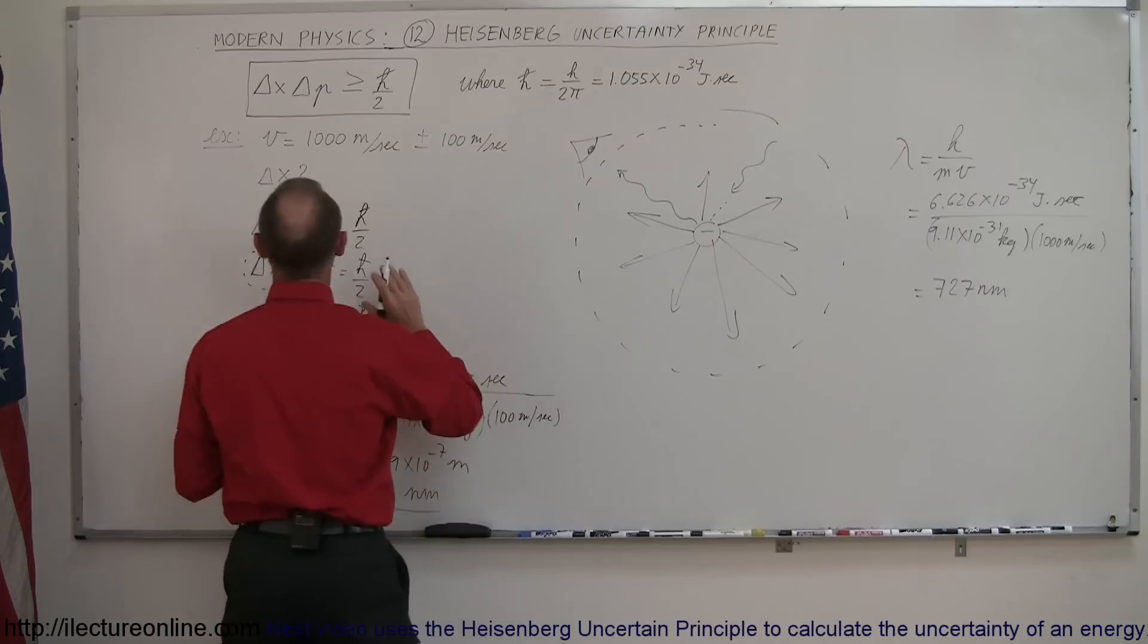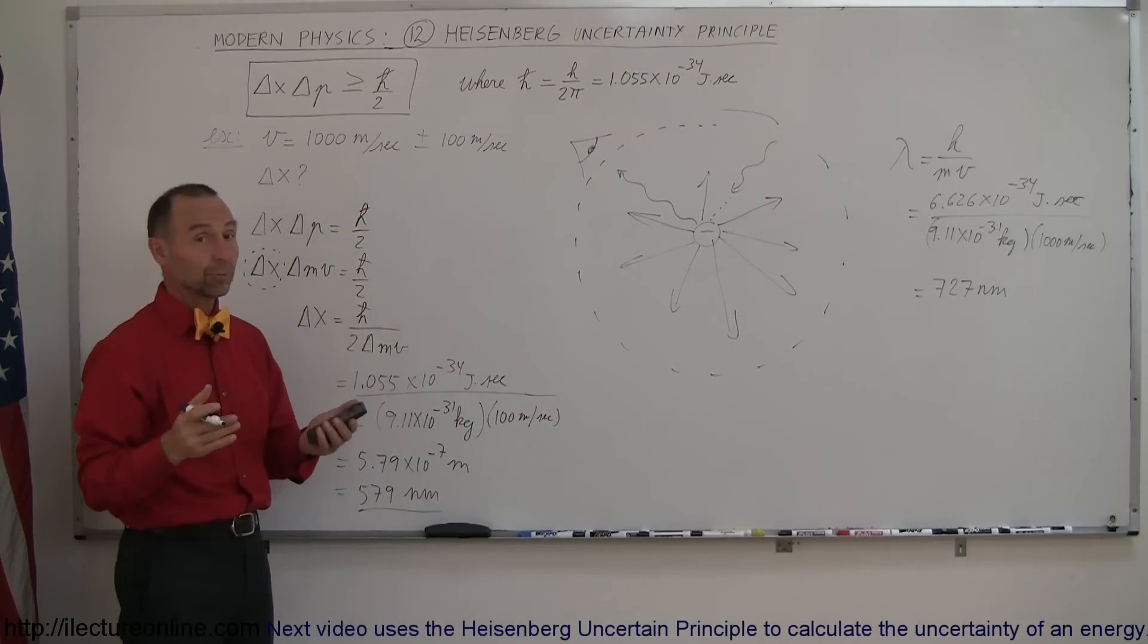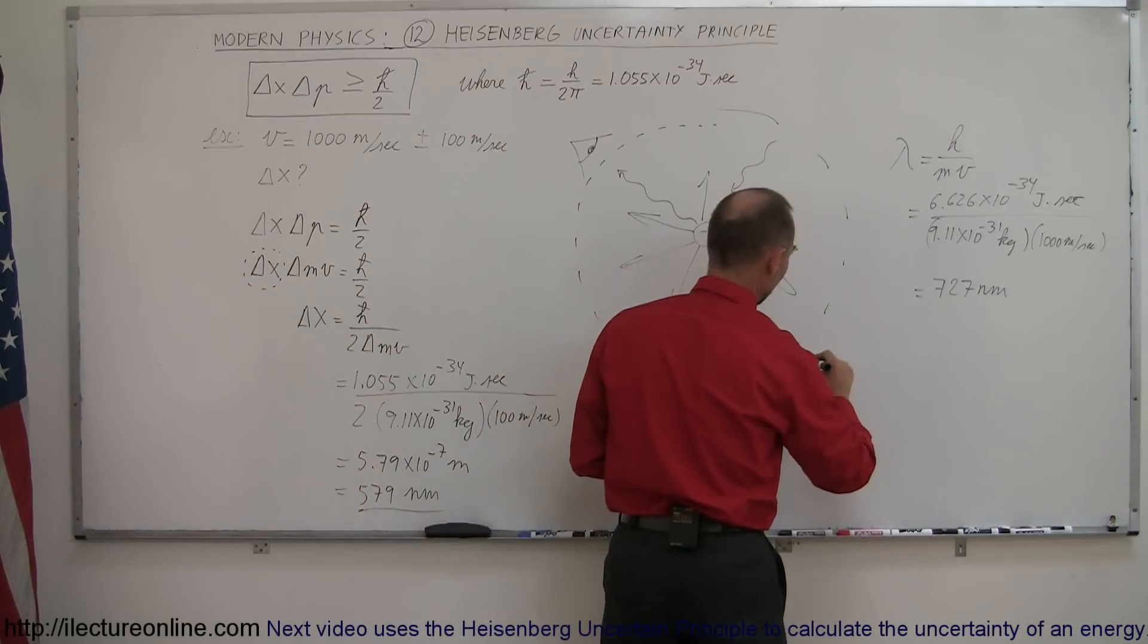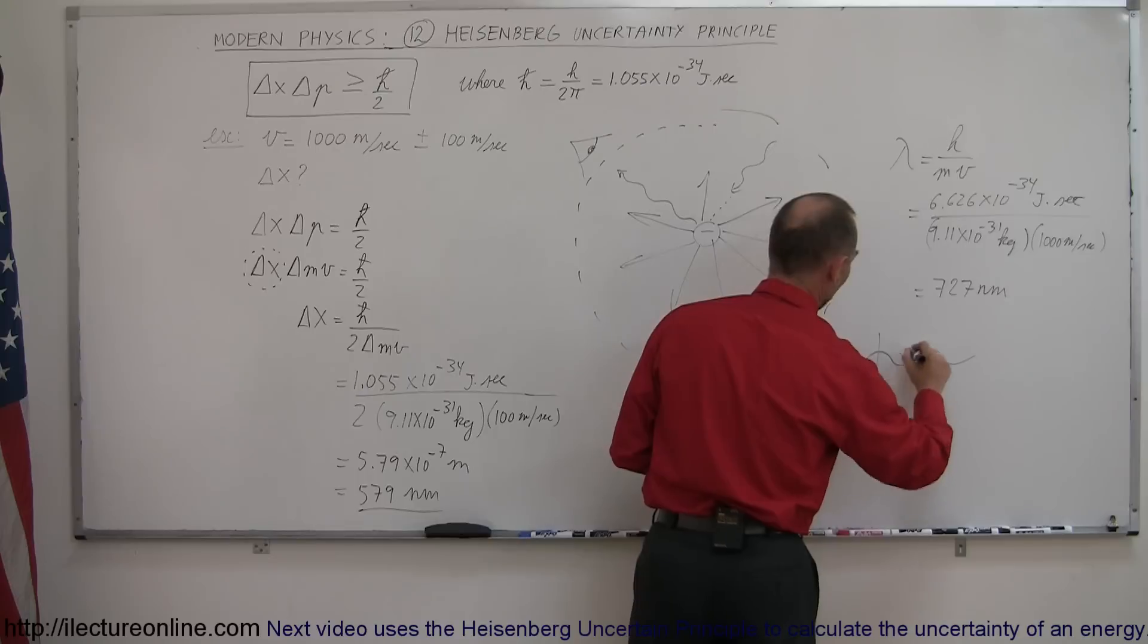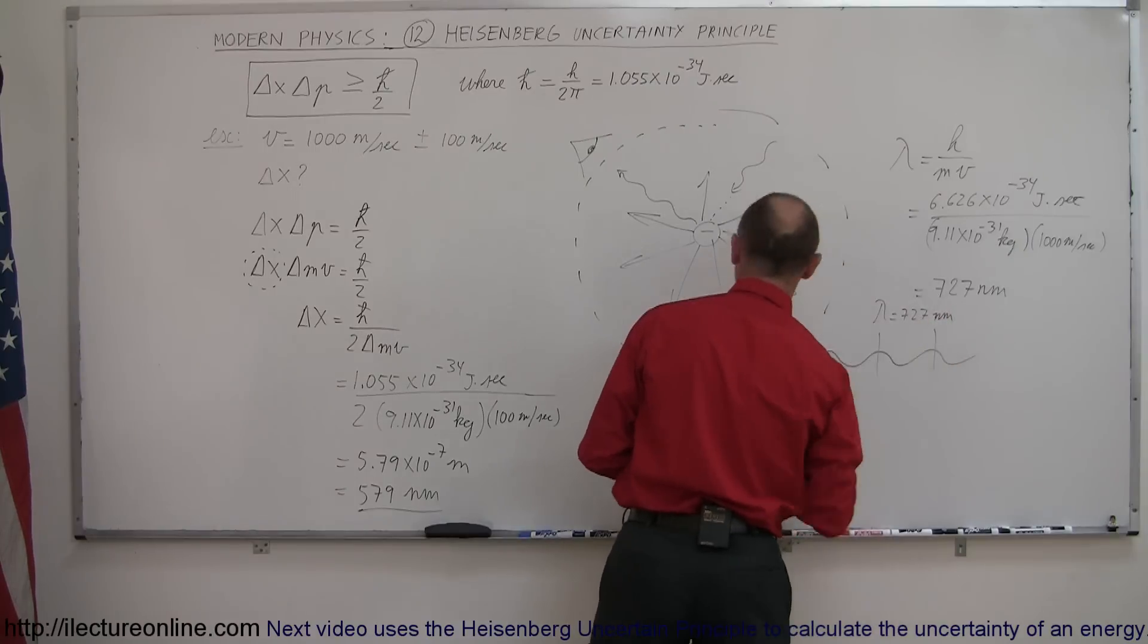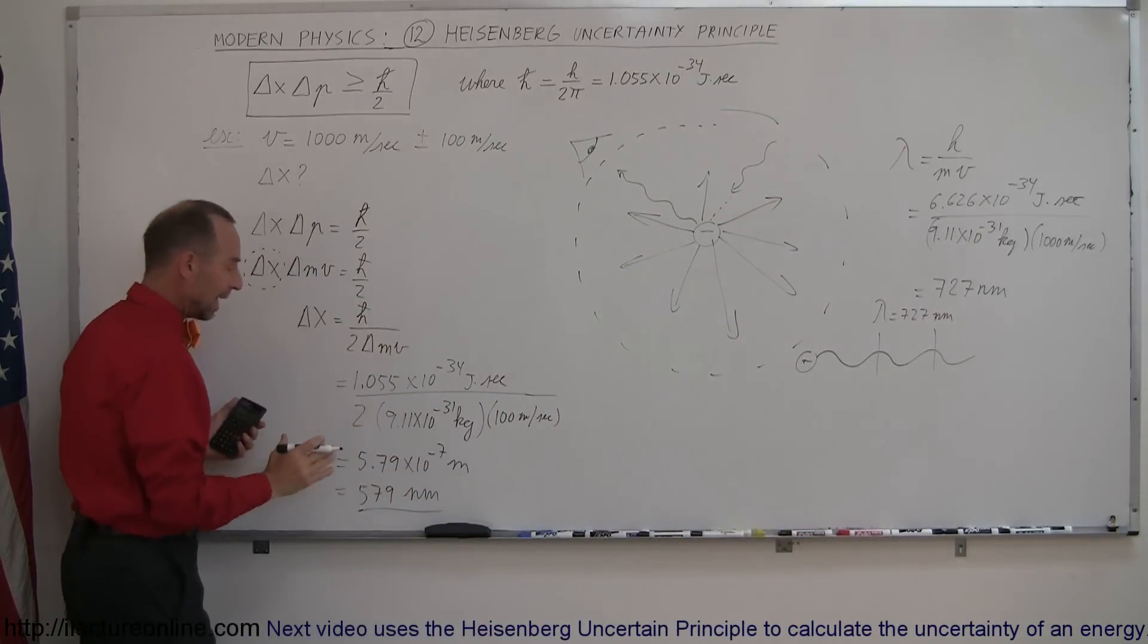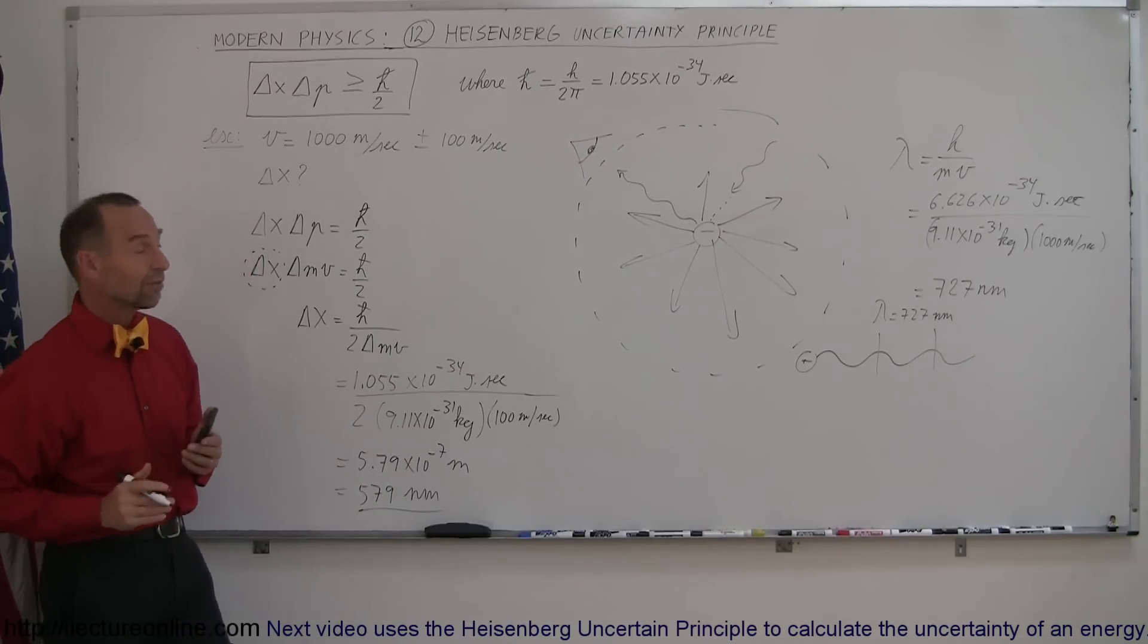Imagine that we have an electron that's moving at 1,000 meters per second, that's 10 football fields per second, that's pretty fast. It has a wavelength of 727 nanometers, so here's a little electron zipping around, and with a wavelength, lambda equal to 727 nanometers, and because of its velocity, that being known with this kind of uncertainty, we then have an uncertainty in its position of 579 nanometers, which is almost a wavelength.